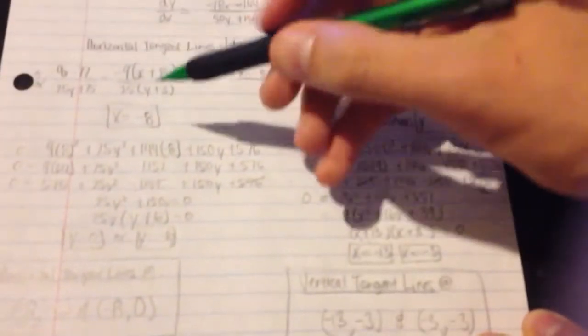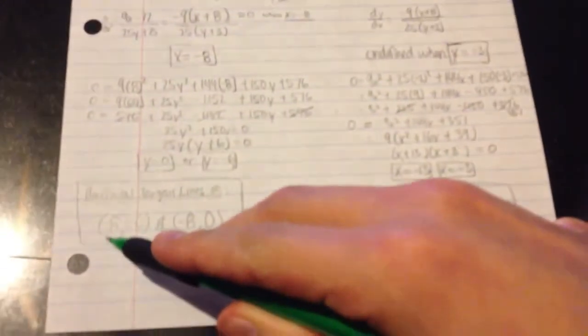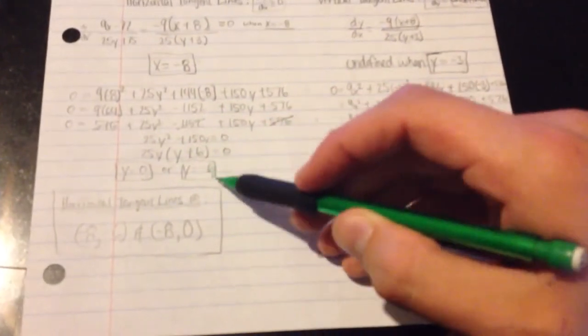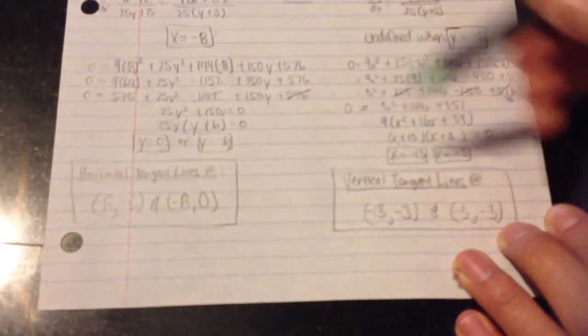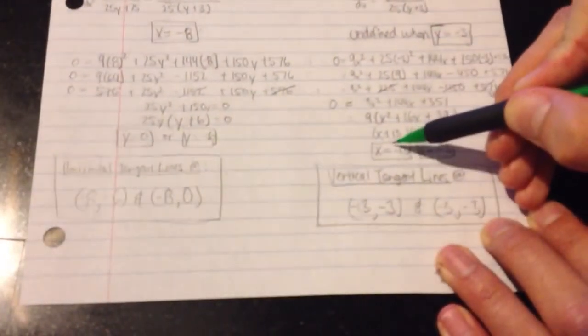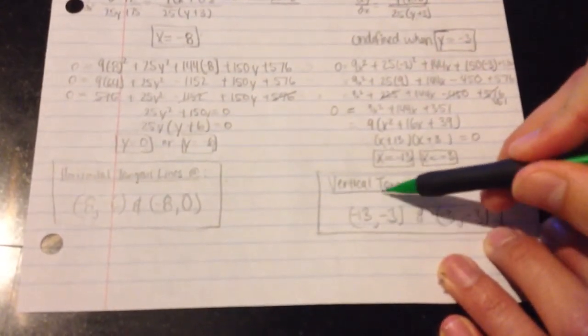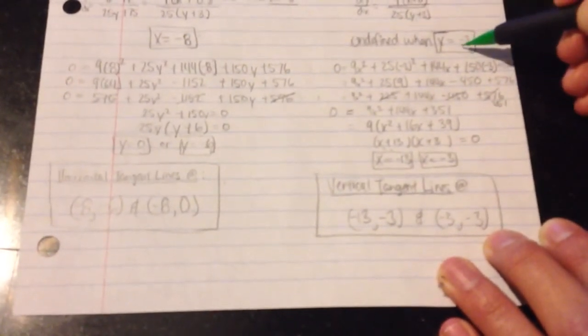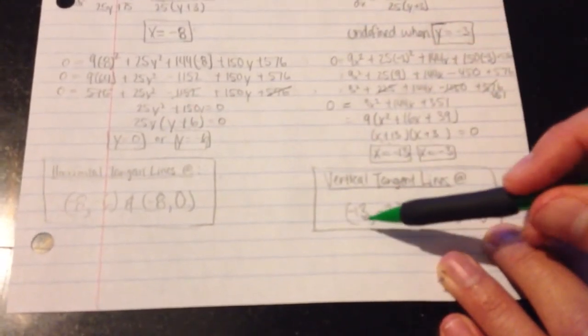Using the values that you have, negative 8 is going to be the x value for both of the horizontal tangent lines. The values you found, y equals 0 and y equals negative 6, are going to be your y values, respectively, for your horizontal tangent lines. x equaling negative 13 and negative 3 are going to be your x values for the vertical tangent lines. As found earlier, y is equal to negative 3, and that's what makes that one undefined. So your vertical tangent lines are as follows: x equals negative 13.